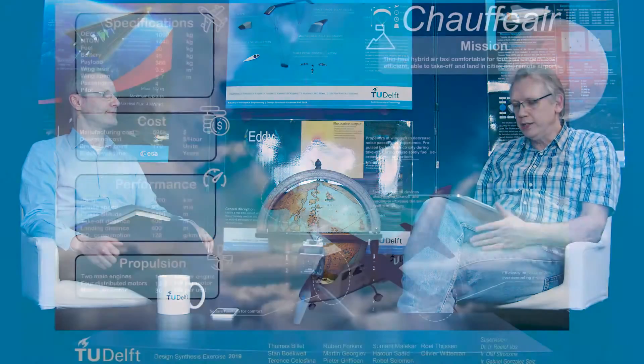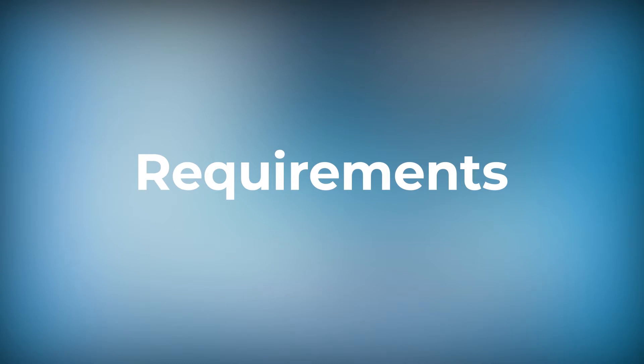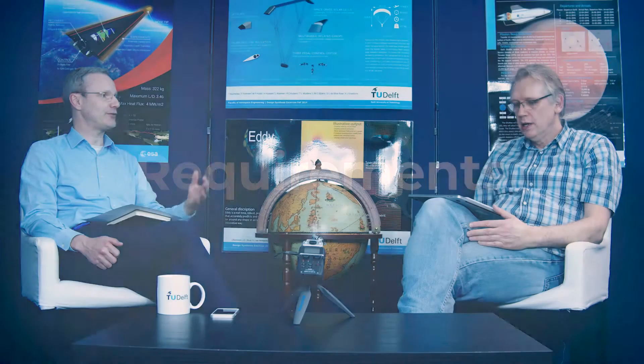We're going to talk a lot about requirements. If all is well, you have received your product guide from your tutor, and in that product guide you find a list of user requirements that have either been written down by the tutor or given by an external client — the top-level requirements, maybe 10 to 15 requirements. Yes, exactly — something like the maximum flight range of this aircraft should be 5,000 kilometers, or the noise level should be lower than a certain number of decibels.